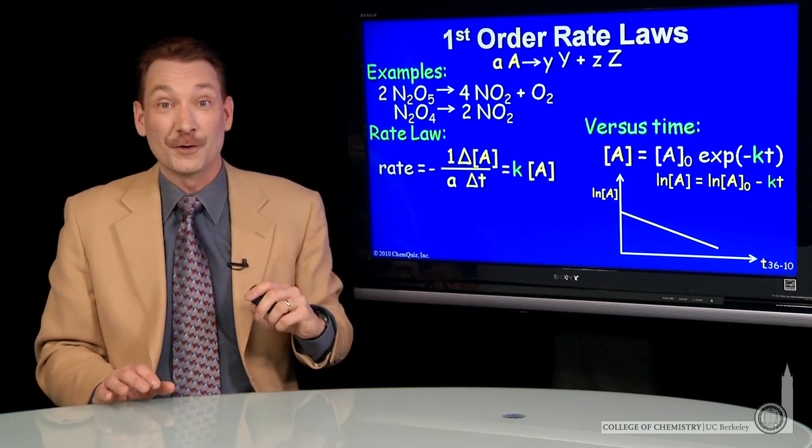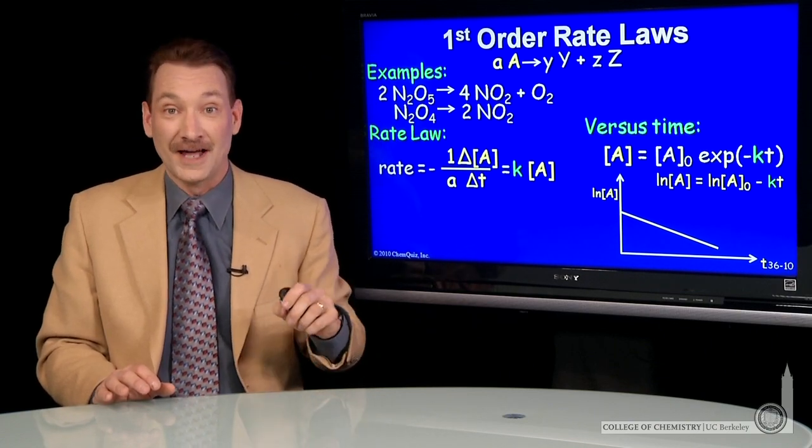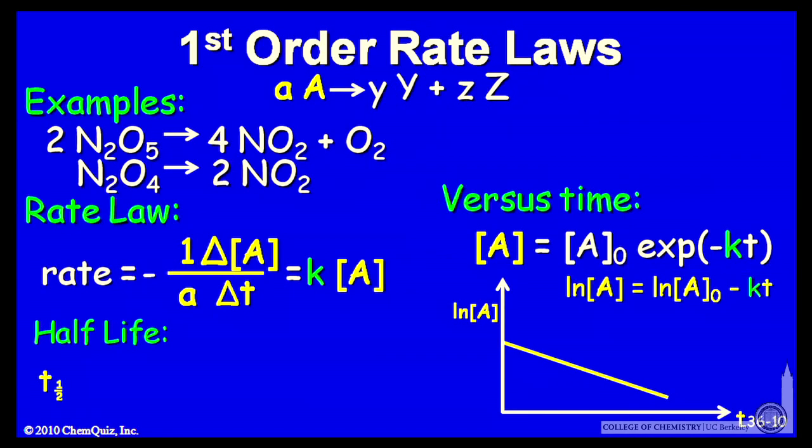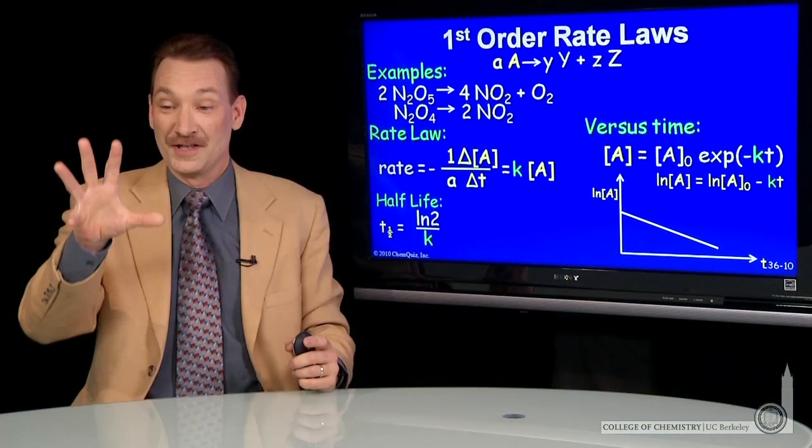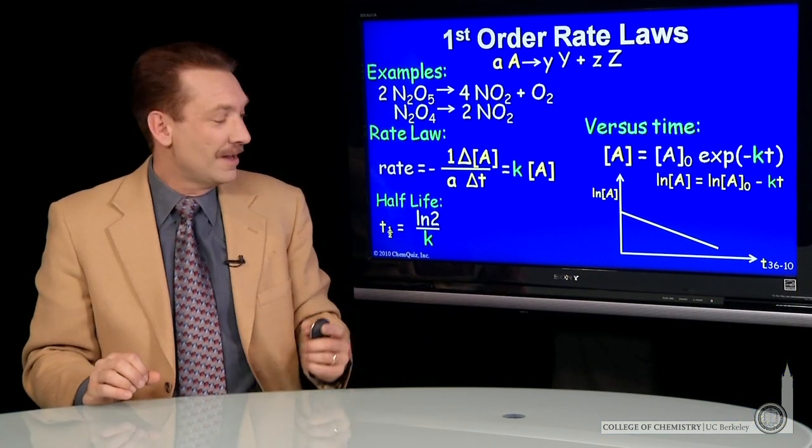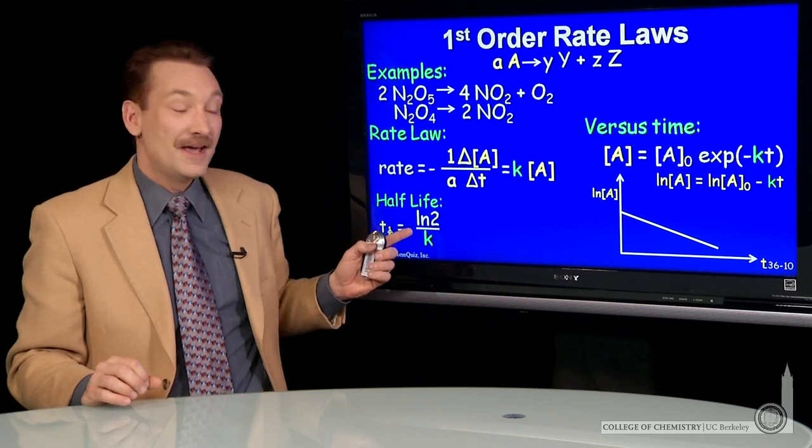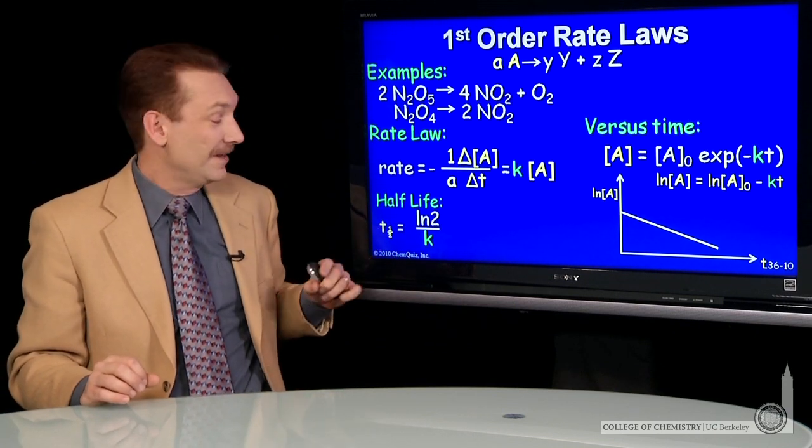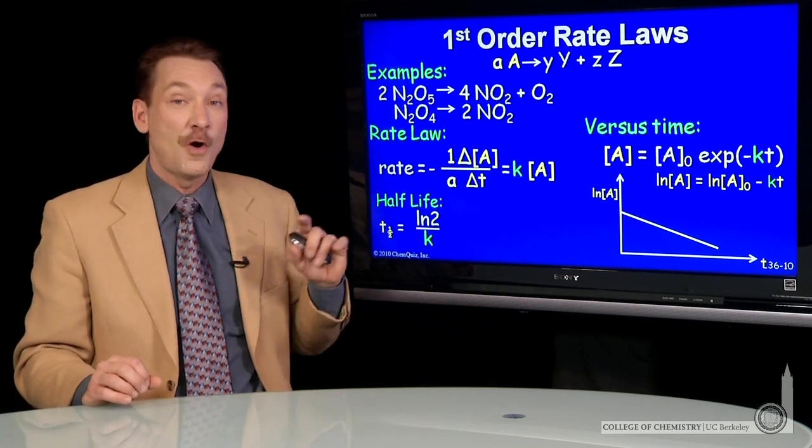Another property of first order reactions is their half-life. The half-life is defined to be the time it takes for one half of the initial reactant to disappear or the initial concentration to fall by a factor of 2. For first order reactions, the half-life, T1 half, is ln2 over k.